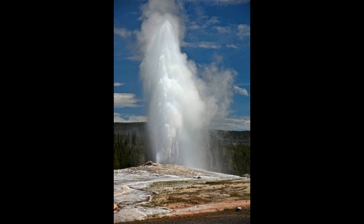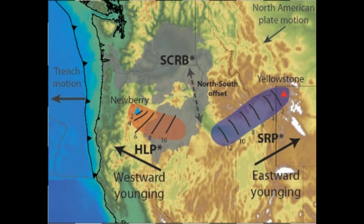A decade ago, with Ross Griffiths of the Australian National University, we aimed to build a 4D model which could replicate the Earth's tectonic processes. Now our research has helped us understand how some of America's most mysterious geographical formations took shape.